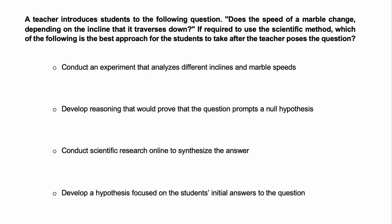Question three. A teacher introduces students to the following question. Does the speed of a marble change depending on the incline that it traverses down? If required to use the scientific method, which of the following is the best approach for the students to take after the teacher poses the question? Would it be conduct an experiment that analyzes different inclines and marble speeds, develop reasoning that would prove that the question prompts a null hypothesis, conduct scientific research online to synthesize the answer, or develop a hypothesis focused on the student's initial answers to the question?